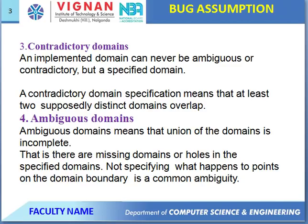Next: Ambiguous Domains. Having ambiguous domains means that the union of the domains is incomplete. There are missing domains, or the specified domains do not specify the membership of points on the domain boundary — this is a common ambiguity.